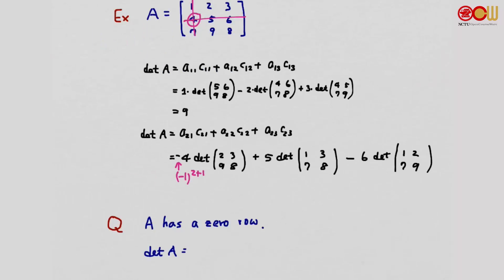Let's ask a question. Suppose this A matrix has a zero row, one row equal to 0, 0, 0, 0. What does this say about the determinant of A? Can we determine the determinant in this case? Indeed we can. If we expand using cofactor expansion along the zero row, then we get 0.